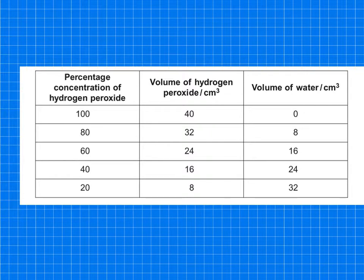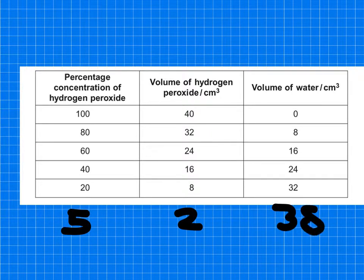We also, I decided as well to add an extra one and they did an extra one at five percent as well. So that was two centimeters cubed hydrogen peroxide in 38 centimeters cubed of distilled water.